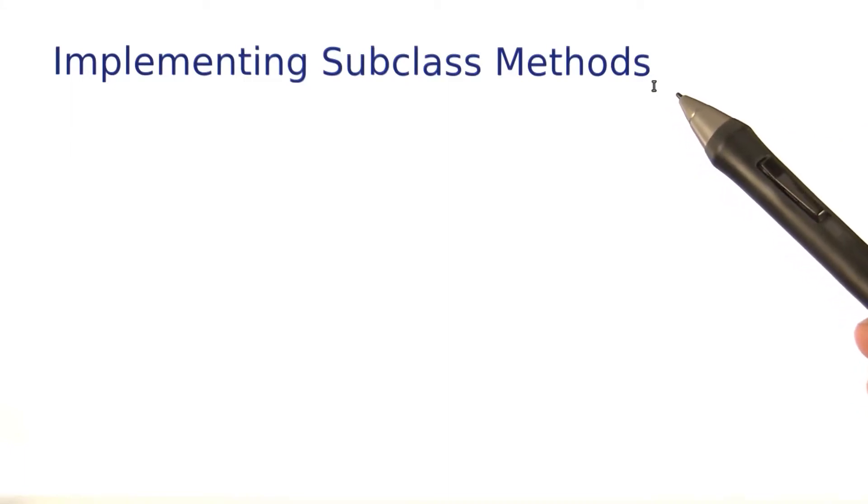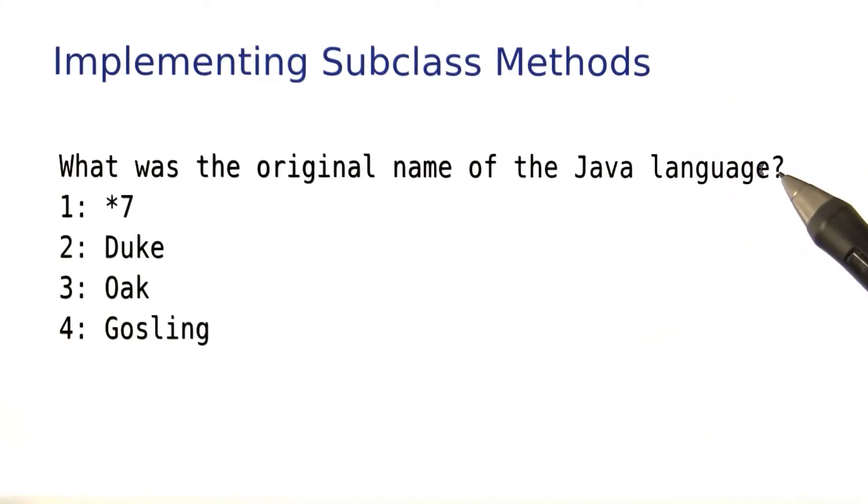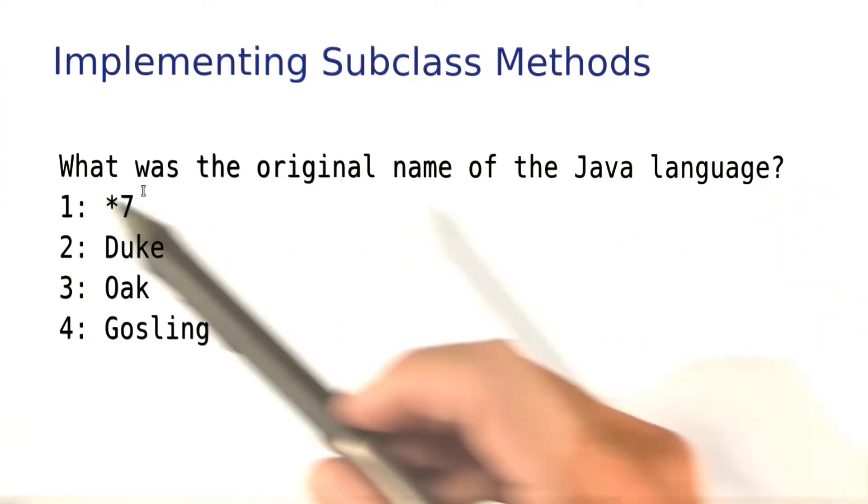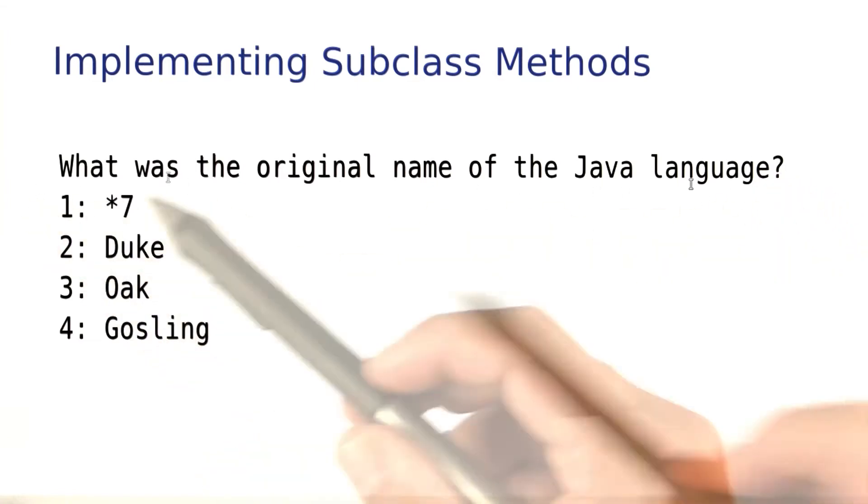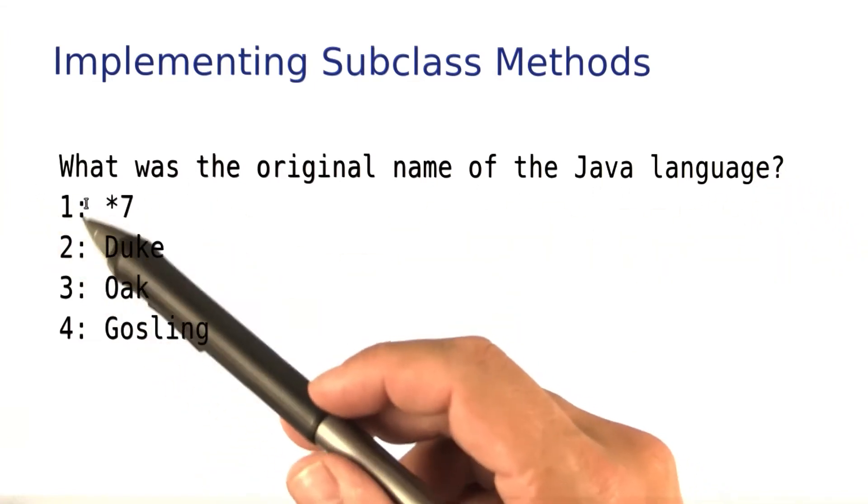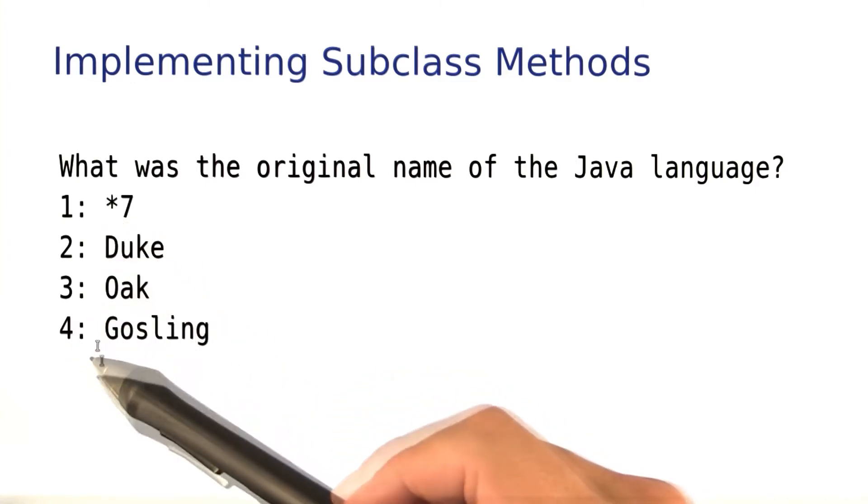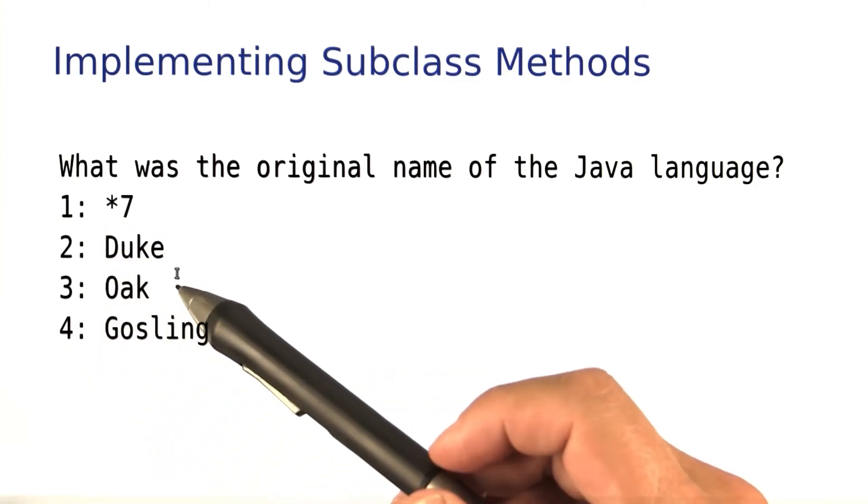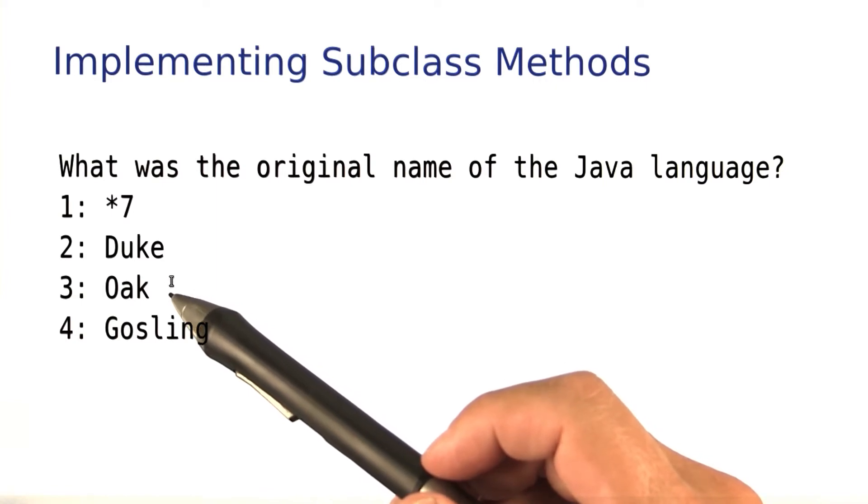Now let's turn to the implementation of the display method. It's supposed to display a choice question in this format. First, the text of the question, then all of the choices, and we put a 1, 2, 3, 4 in front of each of the choices in case the poor test taker is too frazzled to figure out the numbers themselves.